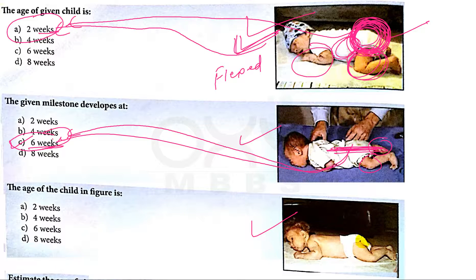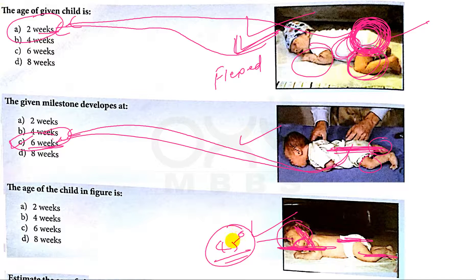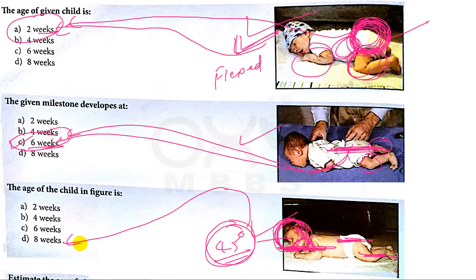And now in this picture, the pelvis is flat, knees are extended, and the head is lifted. This is a 45 degree angle. So in the prone position, the baby is lifting the head or face by 45 degrees, and this is achieved at around eight weeks of age. Because at around six weeks the pelvis was only flat, and at around eight weeks the baby starts to lift the face by 45 degrees.